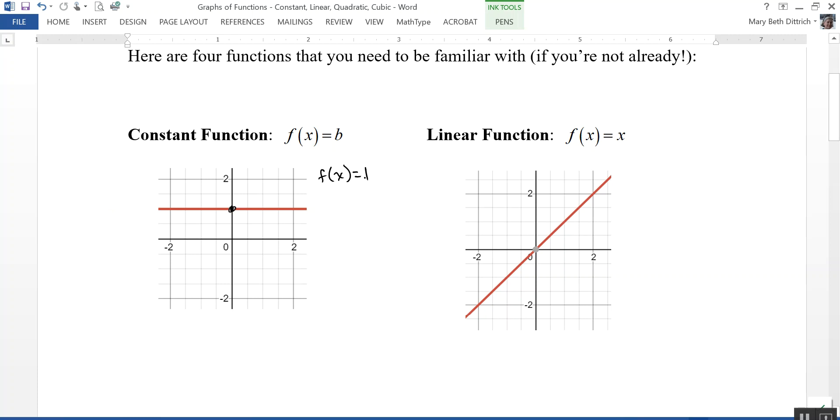What this means is that no matter what value we assign x, y is constantly going to be equal to that same value. y is always going to equal 1. So when x is negative 2, y is 1. When x is negative 1, y is 1. When x is 0, y is 1. y is going to constantly be 1. So the graph of a constant function is a horizontal line.